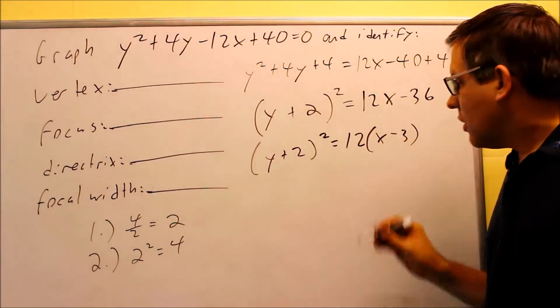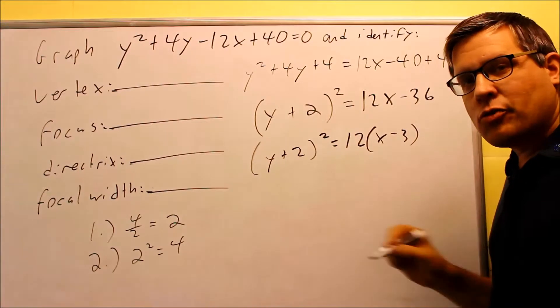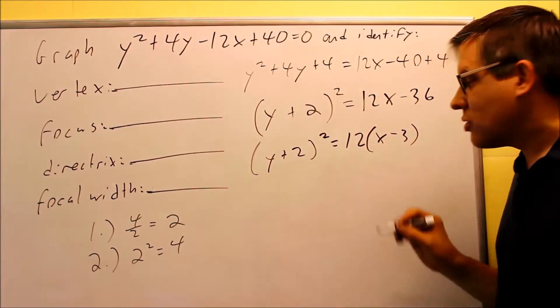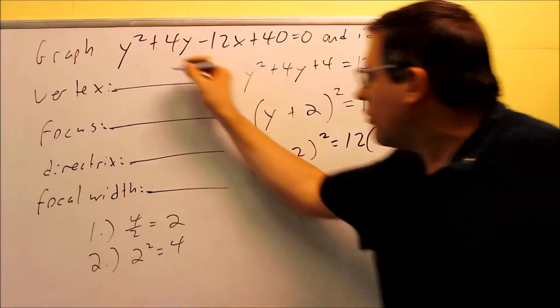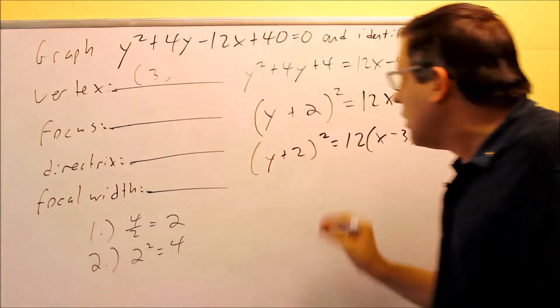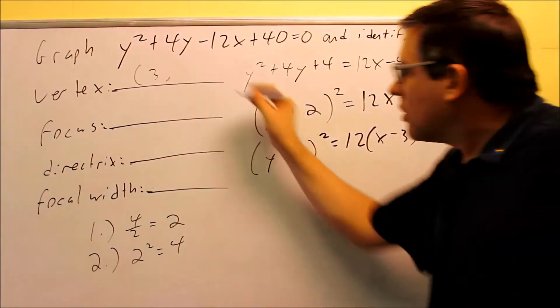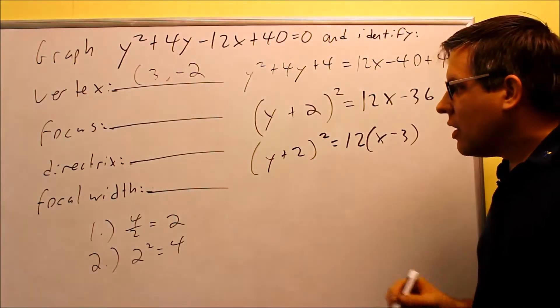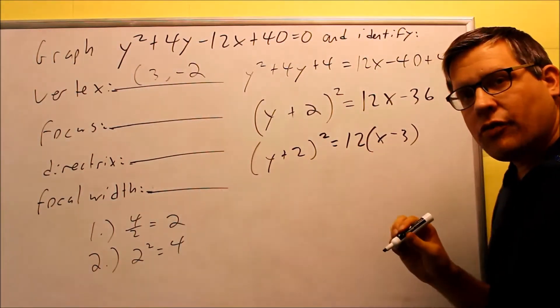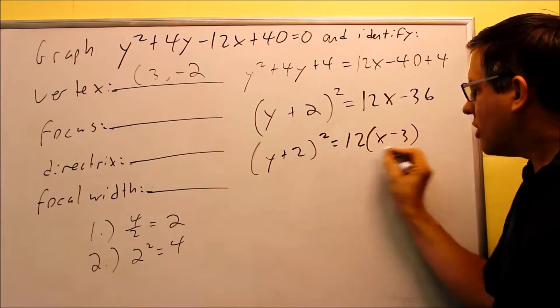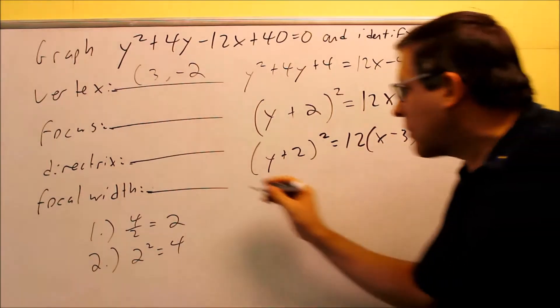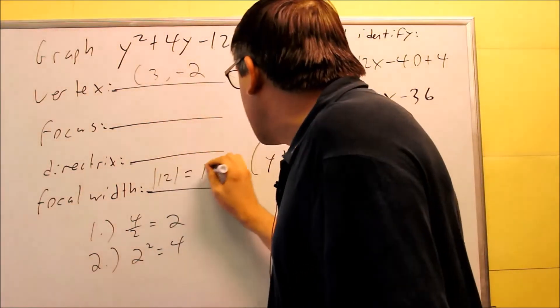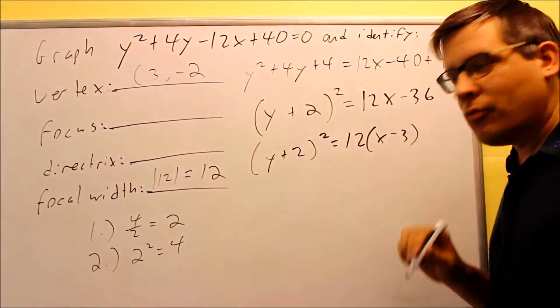So now that I have it in the proper form, I can answer the vertex. We're going to do opposite sign of each one of these, remembering that the x has to come first. So opposite sign of this is going to give us positive 3. Opposite sign of plus 2, negative 2. So 3 negative 2 is the vertex. Next I want to find the focal width. The focal width is the absolute value of this number in front of the non-squared variable. So absolute value of 12 is going to equal 12. So I got that information complete.